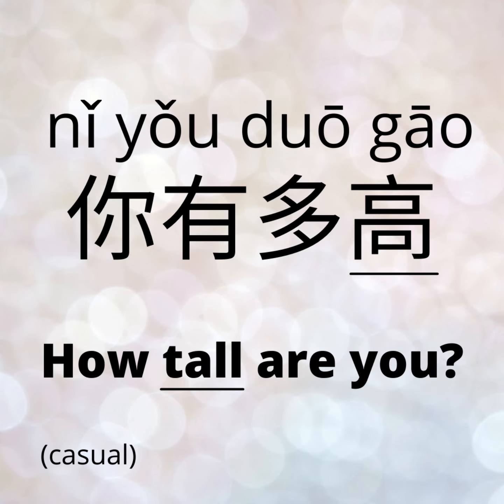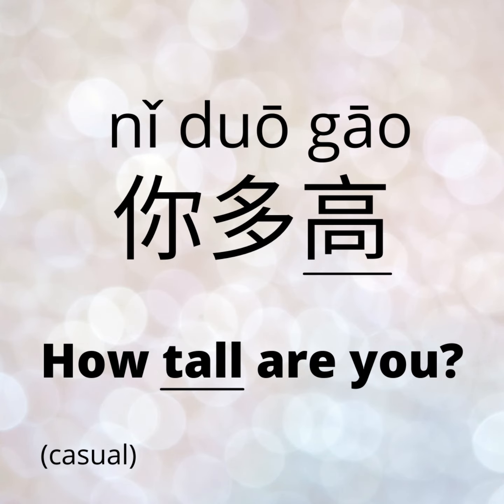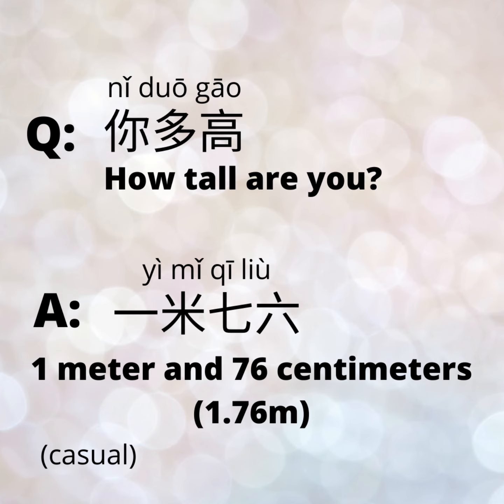For height, we can ask 你有多高? We can also remove the 有, so we could say 你多高? — meaning 'How tall are you?' The answer is usually in meters and centimeters, so it'd be a good idea to convert your height. An example response could be 一米七六, meaning 1 meter and 76 centimeters.